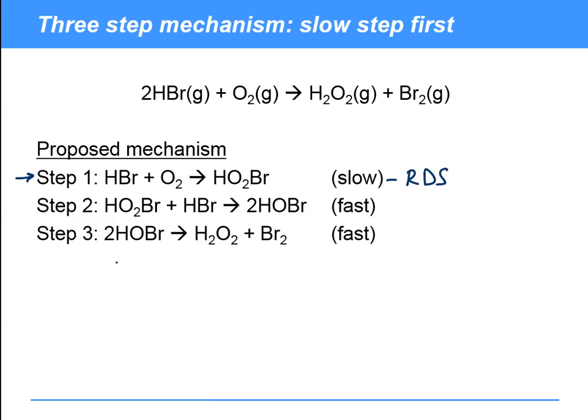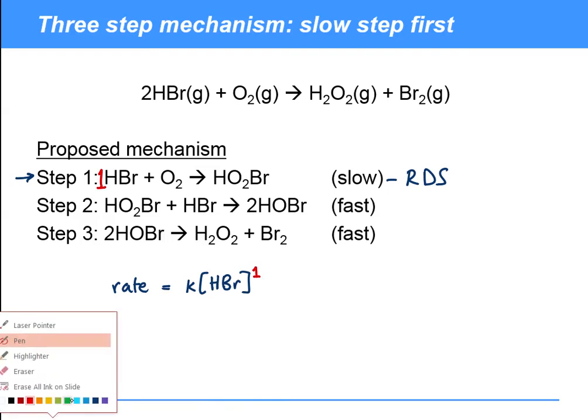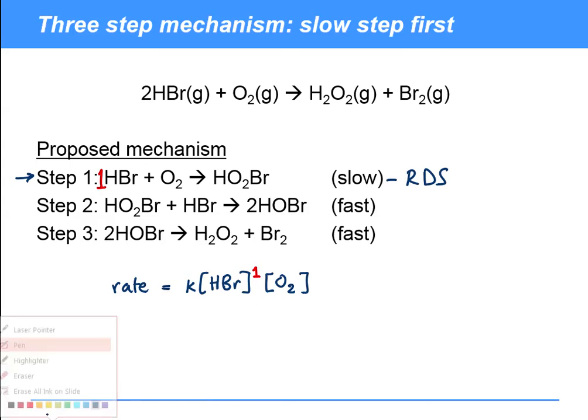So I can simply use this step to tell me what the rate equation will be. In this case, we have rate equals k times HBr concentration. The order for that will be one because we've got one HBr here. Similarly for oxygen, oxygen is in the rate determining step and the order for oxygen will also be one because there is one oxygen. That is the rate law you'd expect from this particular mechanism.